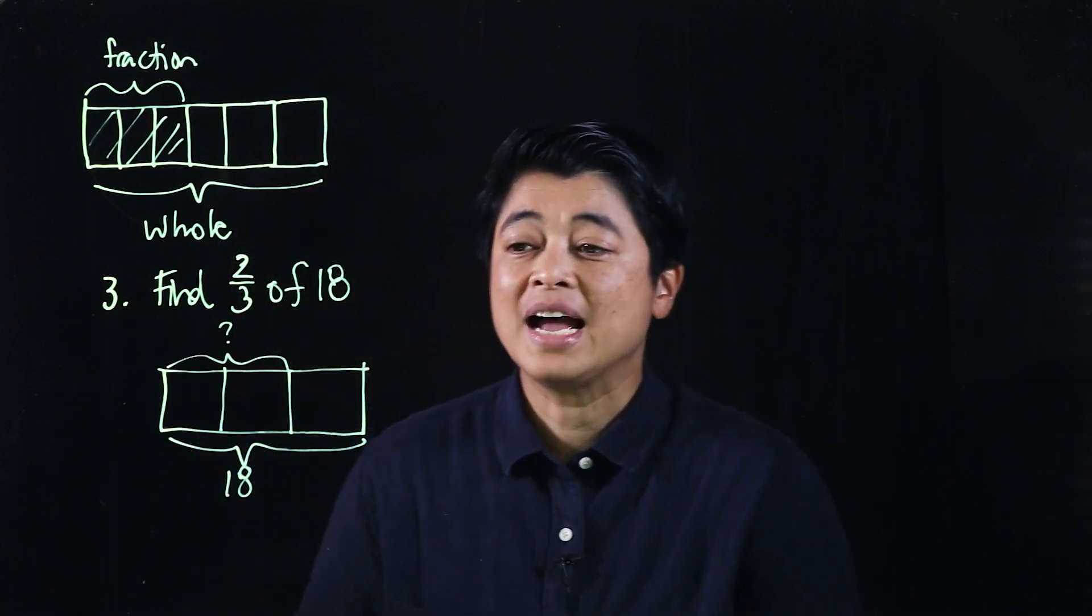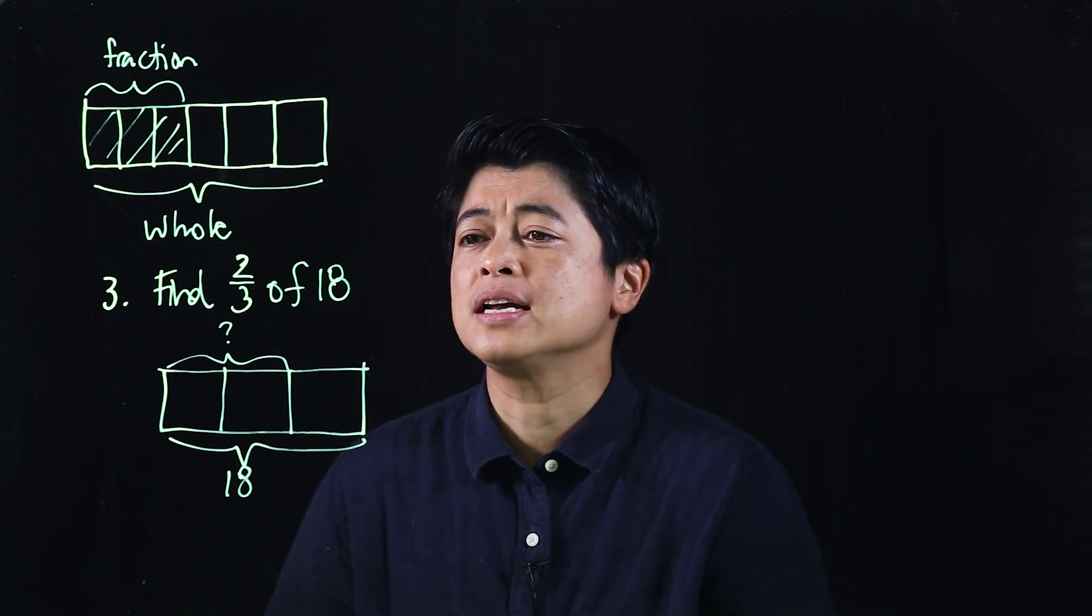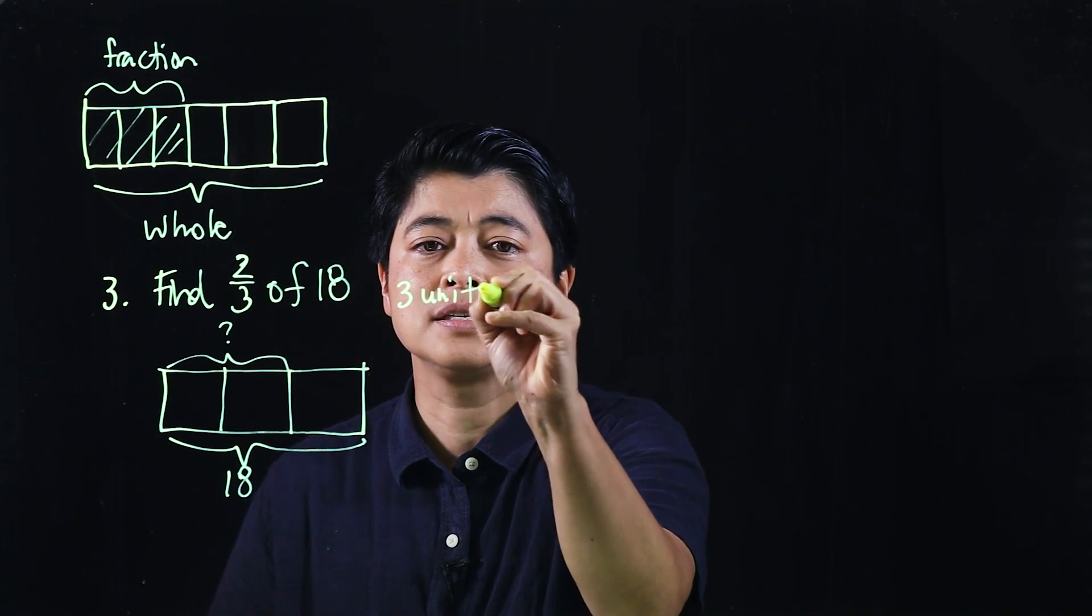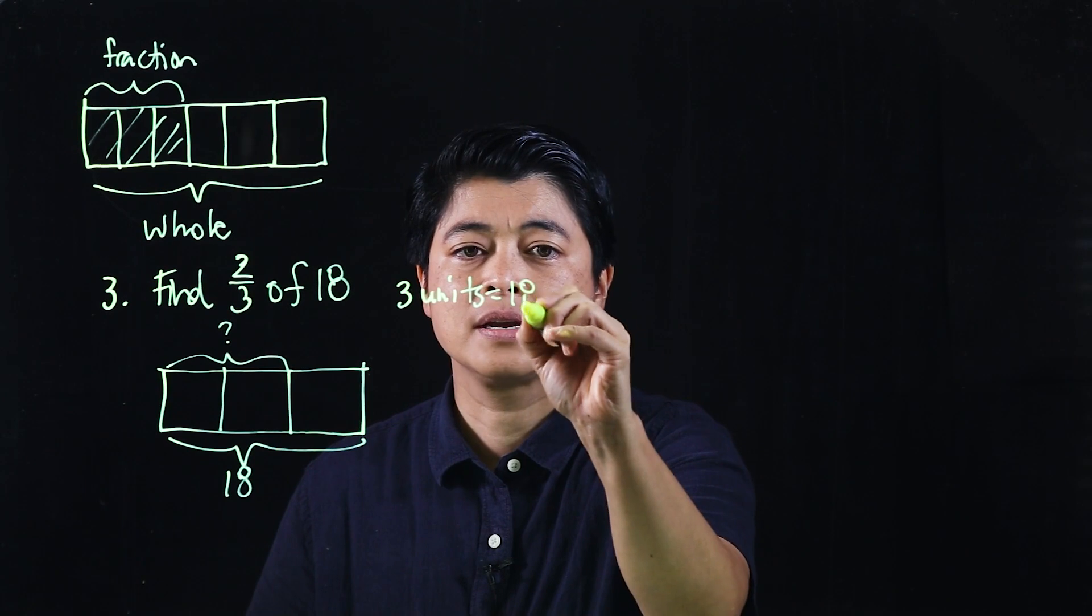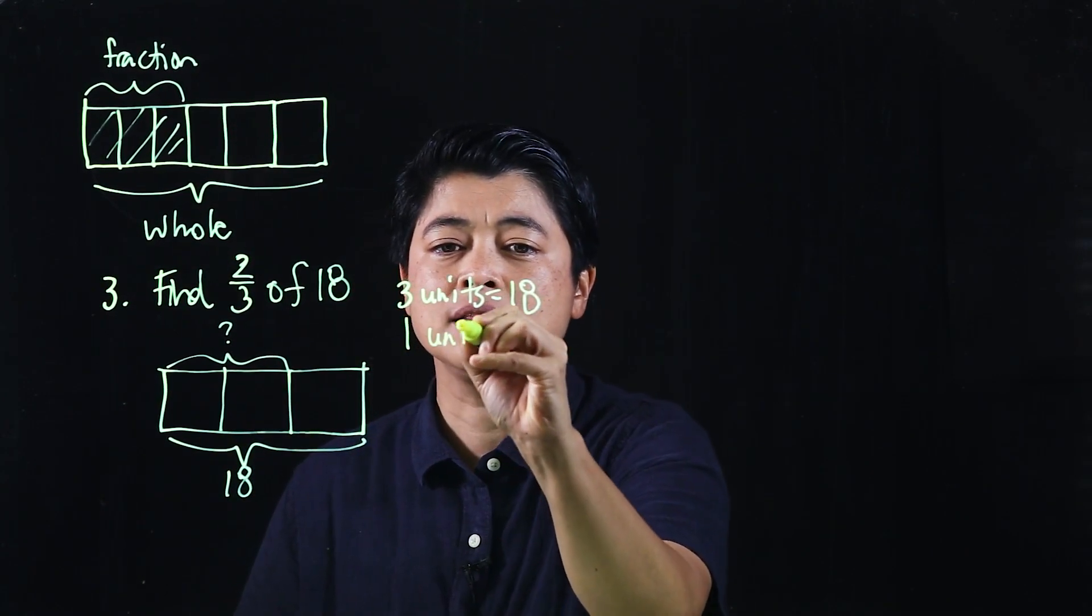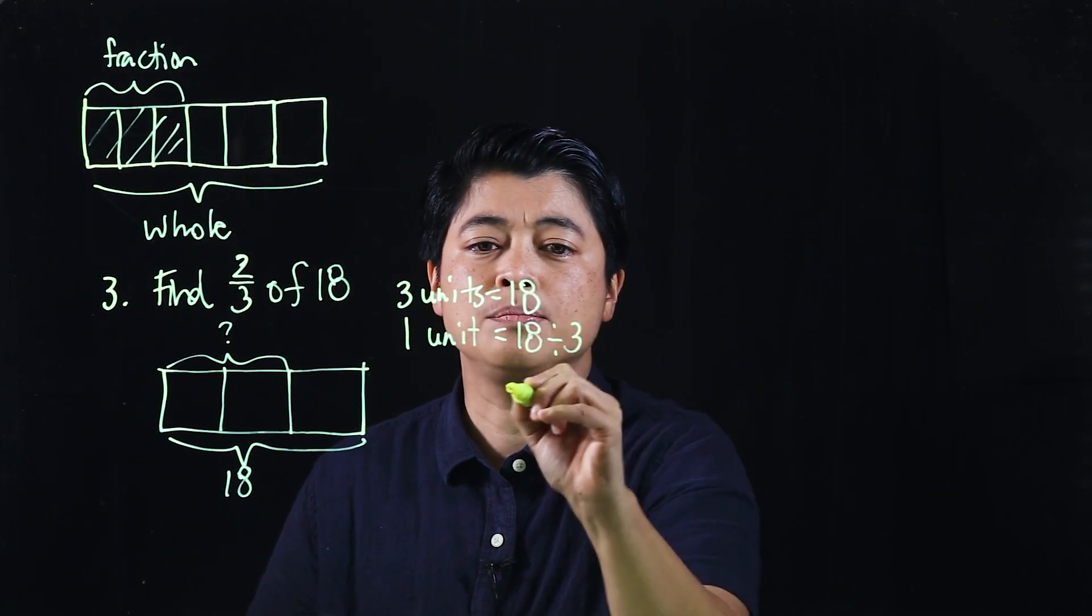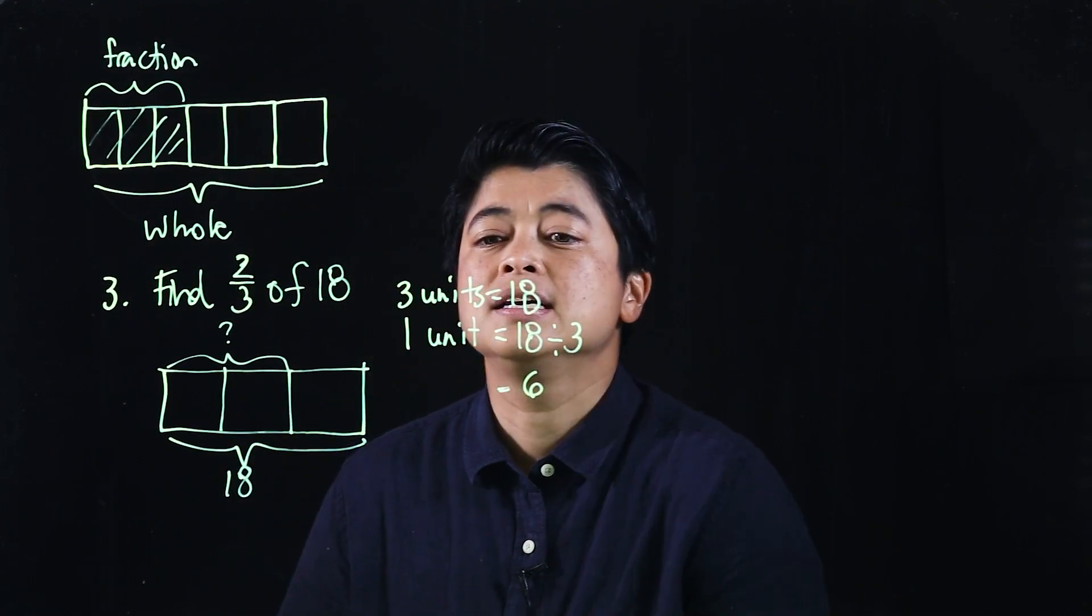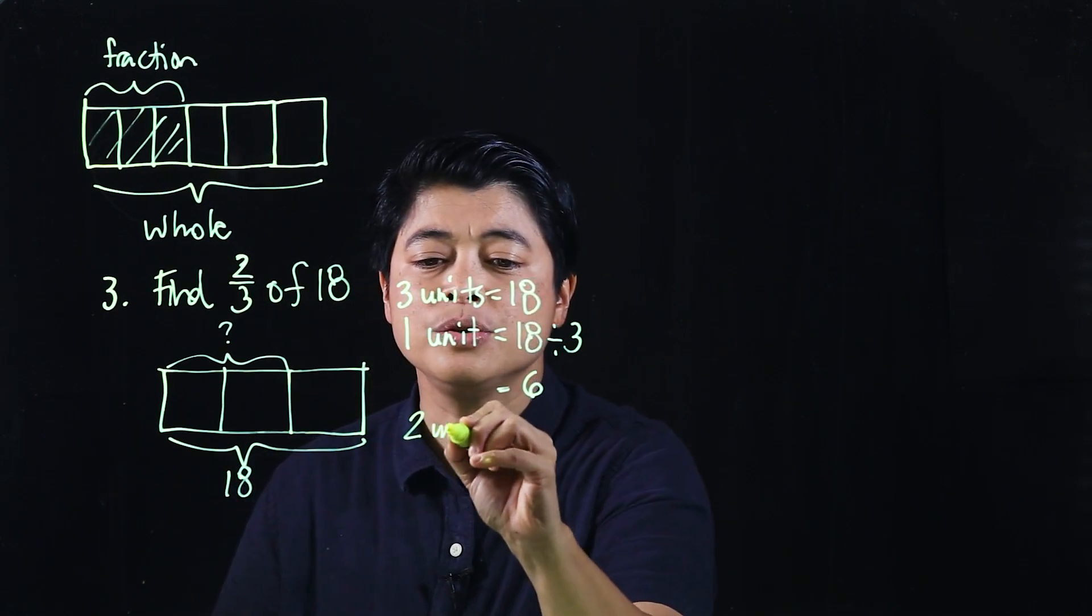We'll start with number 3. It says find two-thirds of 18. It has a bar model and leading questions. The way they want us to answer is to say that three units equals 18, so one unit is 18 divided by 3, which means one unit is 6. But we want two of the units, so two units.